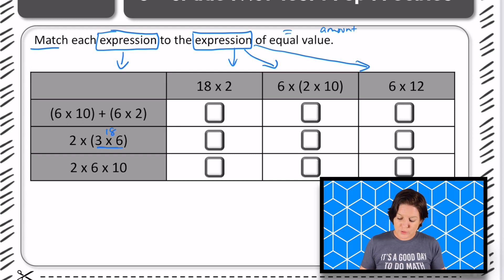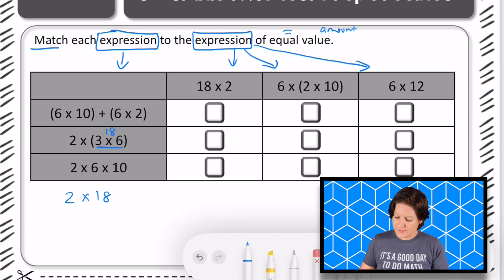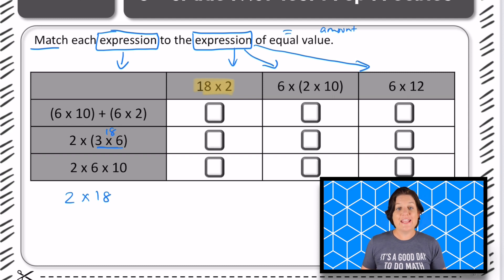So then we have 2 x 18. So we have 2 x 18 and if you notice, this column right here has 18 x 2. That's using the commutative property there.